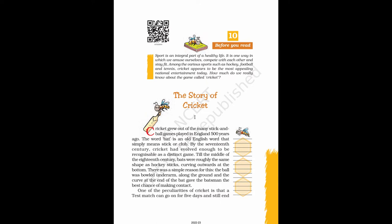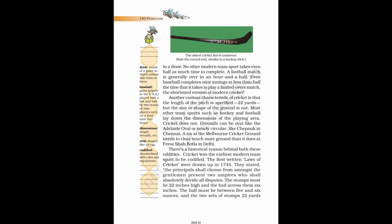One of the peculiarities of cricket is that a test match can go on for five days and still end in a draw. No other modern team sport takes even half as much time to complete. A football match is generally over in an hour and a half. Even baseball completes nine innings in less than half the time that it takes to play a limited overs match, the shortened version of modern cricket. Another curious characteristic of cricket is that the length of the pitch is specified at 22 yards, but the size or shape of the ground is not. Most other team sports such as hockey and football lay down the dimensions of the playing area. Cricket does not.